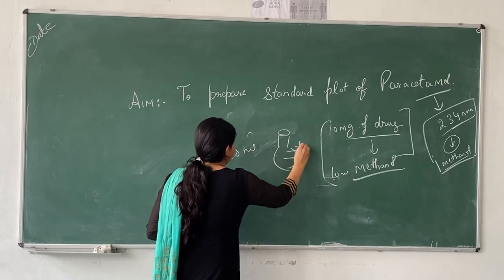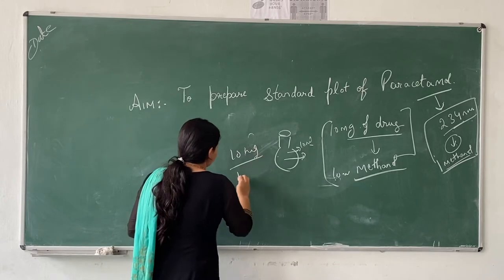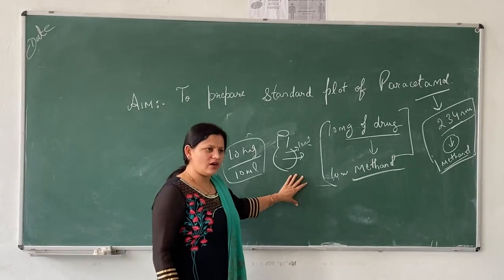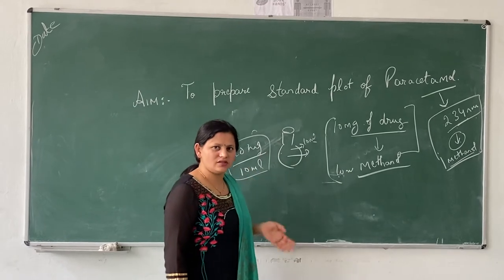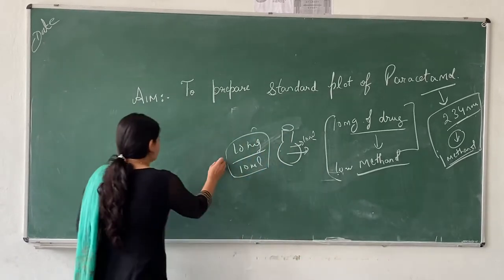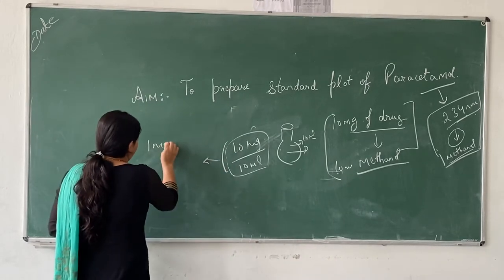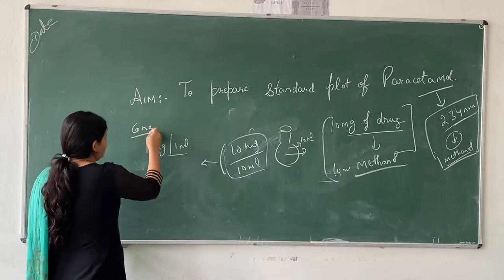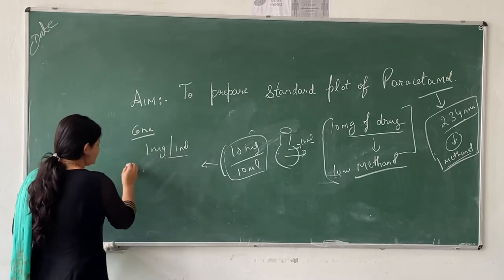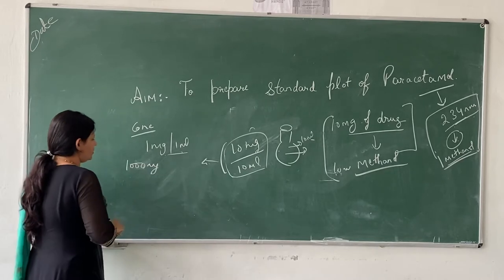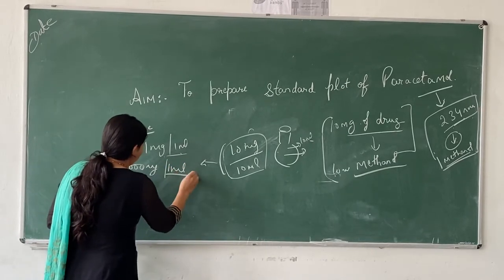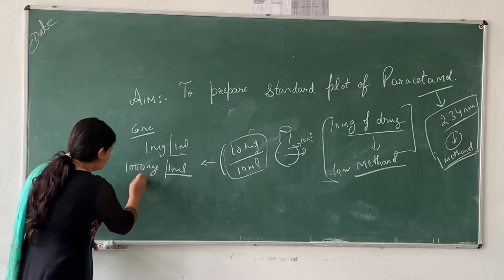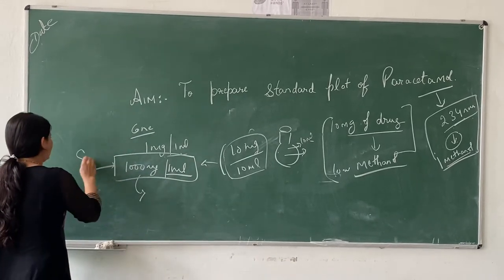This volumetric flask will now be made up to 10 mL. So 10 mg has been completely dissolved in 10 mL. If it is not completely dissolved, we need to sonicate this solution — we always require that the drug should be completely dissolved in the solvent. 10 mg per 10 mL means the concentration of this drug is 1 mg/mL, and 1 mg is equivalent to 1000 micrograms.